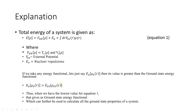The electron density that gives the lowest value of the energy functional is the ground state electron density, and that energy functional will be called the ground state energy functional. Whichever energy functional we take, its value should be greater than or equal to the ground state energy functional, meaning the ground state energy functional will always have the lowest possible value.